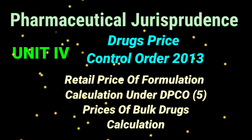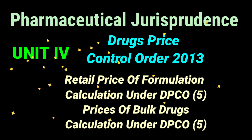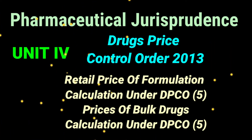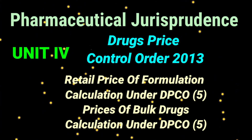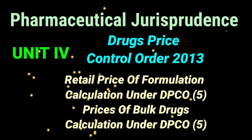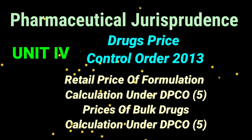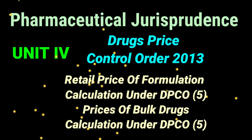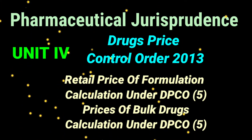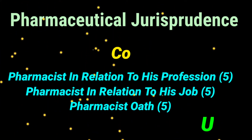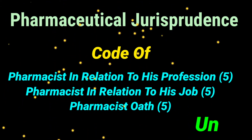Unit 4 covers the National Pharmaceutical Pricing Authority and the Drugs Price Control Order (DPCO) 2013. Two important questions here are: calculation of retail price of formulations under the Drugs Price Control Order, and calculation of prices of bulk drugs under the Drugs Price Control Order.